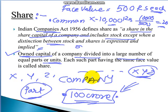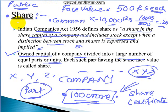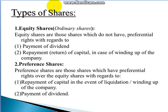A share represents a part of the company's capital. The company gives a share certificate in return for your investment. Public limited companies form and trade these shares in the share market. There are basically two types of shares: the first type is equity shares and the second type is preference shares.